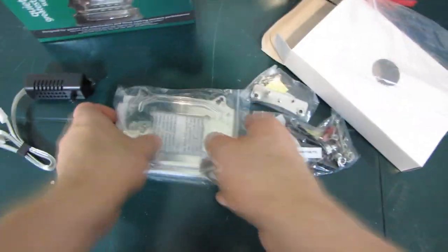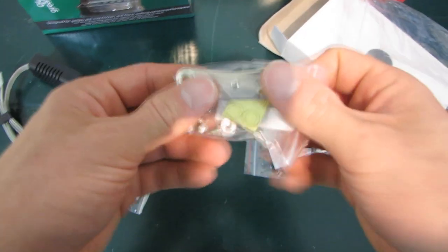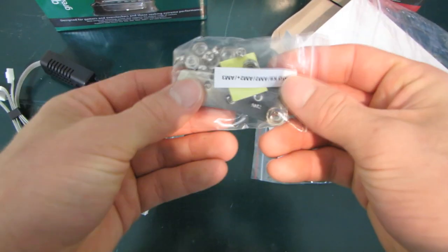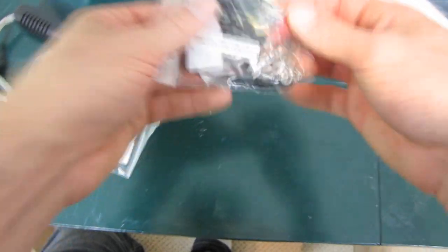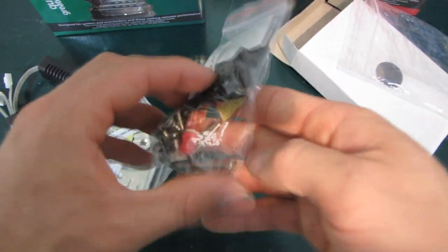Then we have a universal backplate for AM2, AM3, 775, 1156, 1366. We have the AMD mounting hardware and then we have the Intel mounting hardware. They've also included some extra fan mounting grommets as well as some thermal compound.